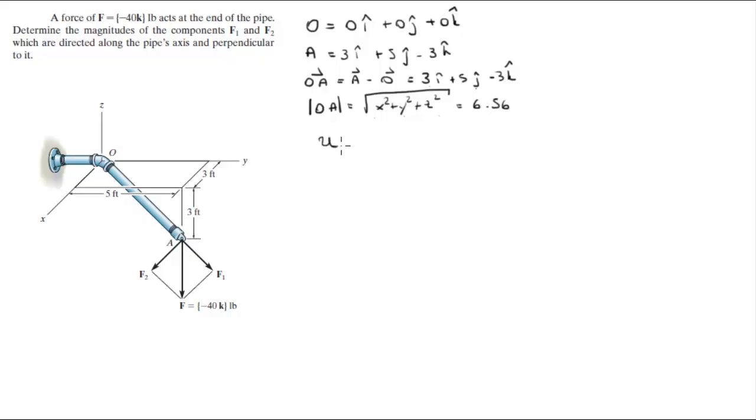You can find with these values the unit vector OA which will be the tiny unit vector right here with a magnitude of 1, by dividing the OA position vector by its magnitude, which is equal to 0.457i plus 0.762j minus 0.457k.